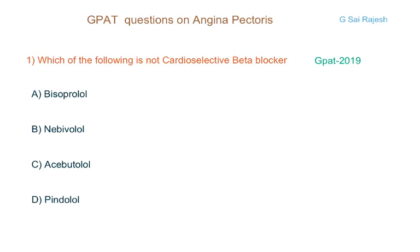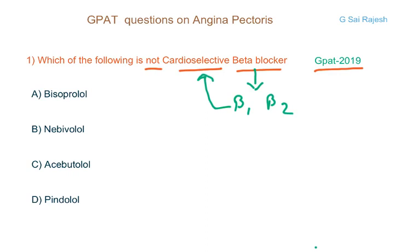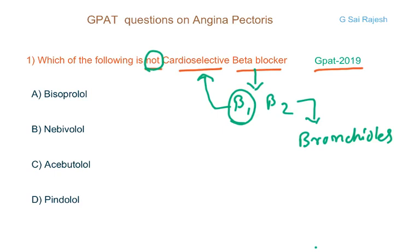The first question, given in GPAT 2019, is: which of the following is not a cardio-selective beta blocker? When you say beta blocker, you are talking about an agent which is blocking beta receptors in general — it includes both beta1 and beta2. Beta1 receptors are present on the heart and are known as cardio-selective, whereas beta2 are present on bronchioles, so they are selective to the respiratory system. When you say cardio-selective, you are particularly talking about beta1 receptors. There are two kinds of beta blocker agents: some block both receptors, some more preferentially block beta1. The preferential beta1 blockers are known as cardio-selective.